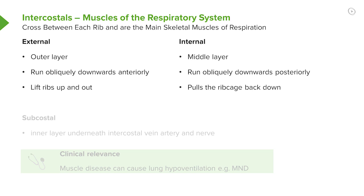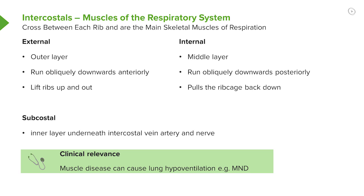The internal intercostals run obliquely downwards and posteriorly, pulling the rib cage back down, and are therefore used during forced expiration but are not necessary for normal expiration. The subcostal muscles run vertically and form the bottom layer, lying underneath the intercostal vein, artery, and nerve. Clinically, if you have a problem affecting the skeletal muscles — such as motor neurone disease — this can lead to hypoventilation and potentially respiratory failure. In fact, that is the mode of death for many patients with end-stage muscle disease, such as motor neurone disease and muscular dystrophies.